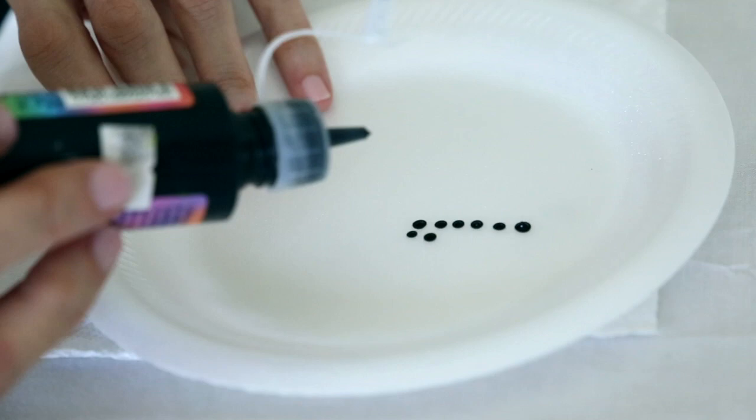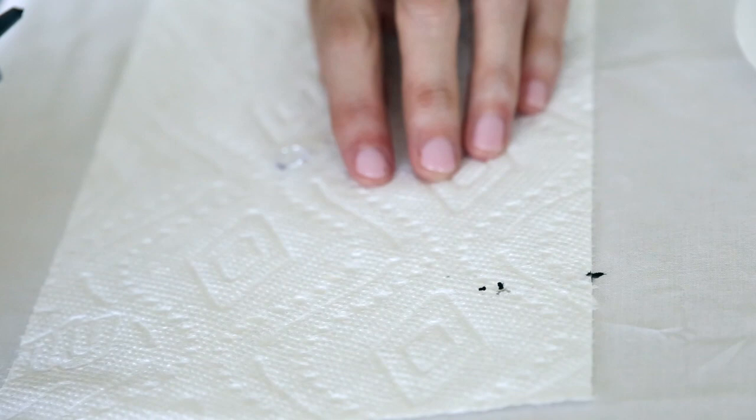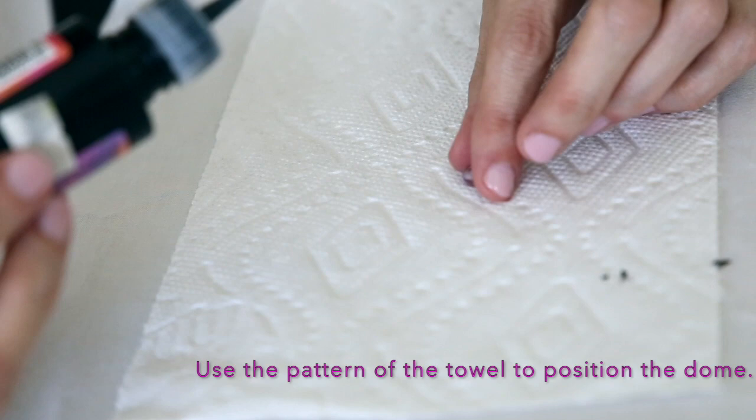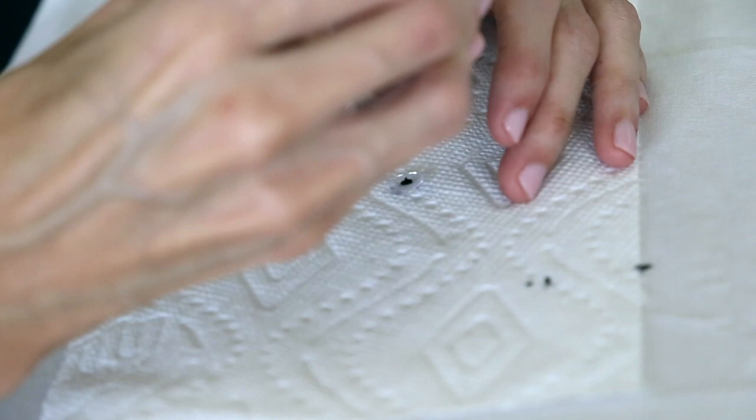So what you are going to do is the same, but in the dome. Following the circle in the towel, if you have it, you position the dome in the correct place.